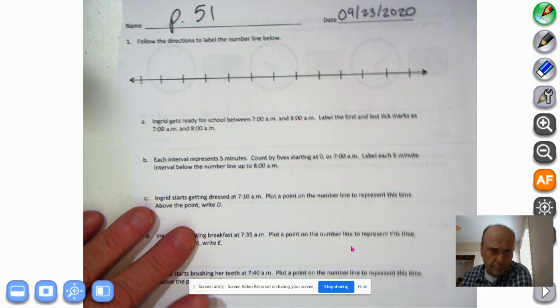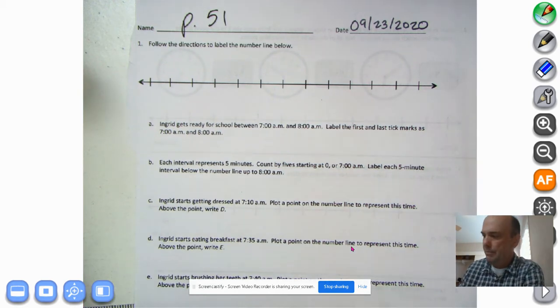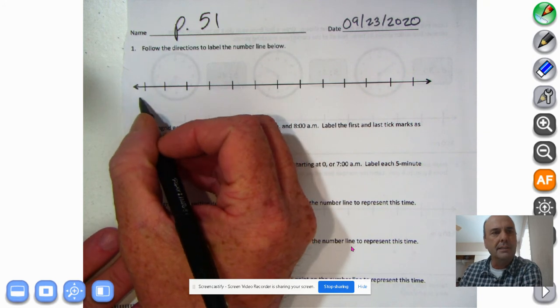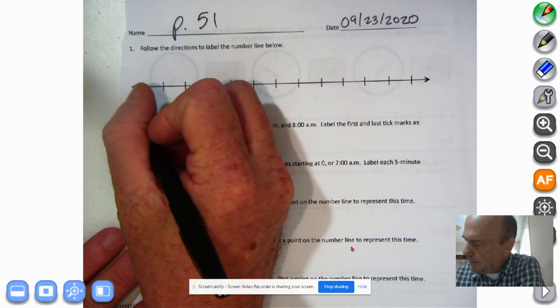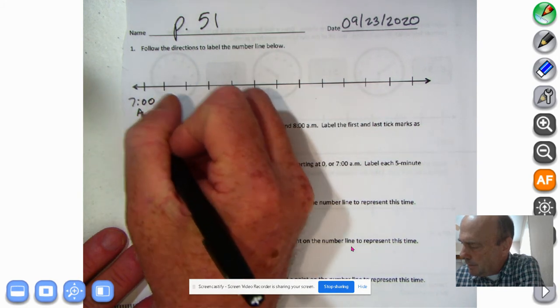Number one, we're going to follow the directions to label the number line below. So Ingrid gets ready for school between 7 o'clock AM and 8 o'clock AM. Label the first and last tick marks as 7 o'clock and 8 o'clock PM. Well, we just go over here to the tick marks. That's what these are called. And we put 7 o'clock and I'll put the AM down here so I have a little room to write.